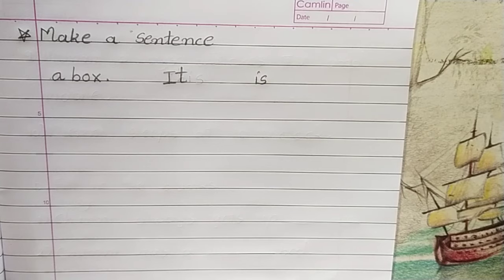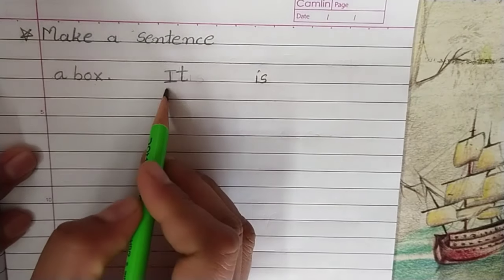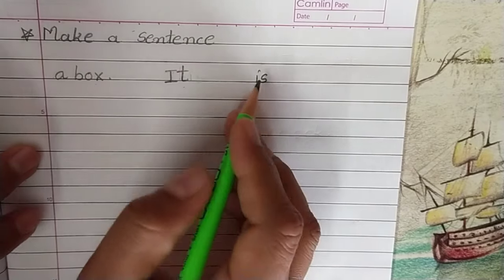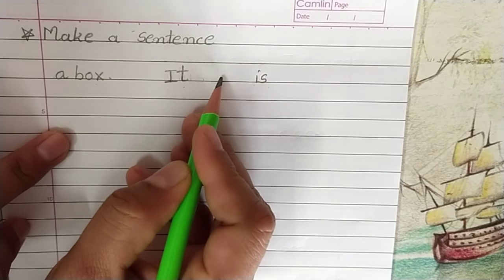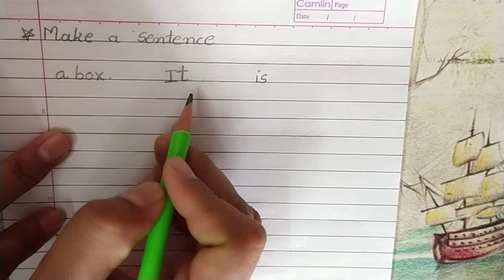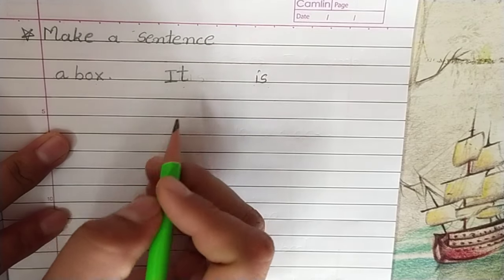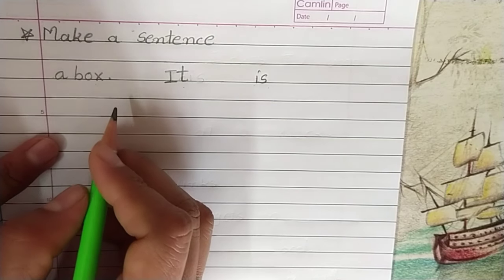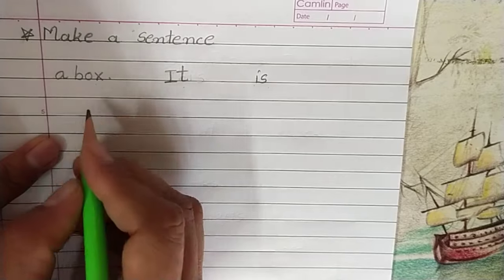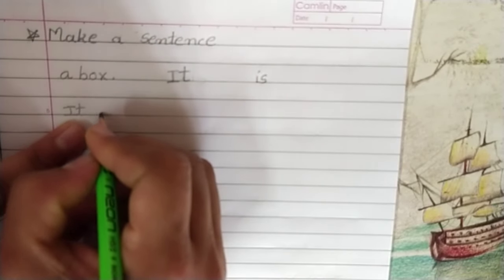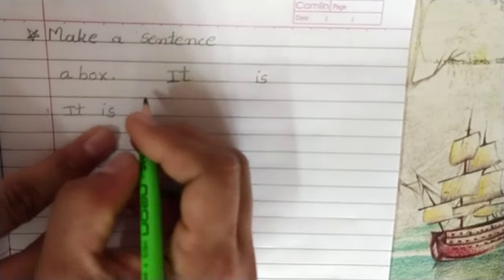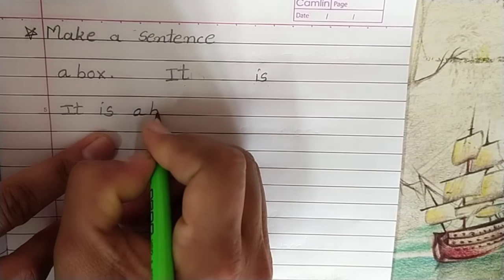અહીં કેટલાક આડા-અવળા શબ્દો આપેલા છે. એ શબ્દોને યોગ્ય ક્રમમાં ગોઠવી આપણે સાચું sentence બનાવશું. તો જુઓ — a box, It, અને is. જે પ્રમાણે આ શબ્દો છે, એ પ્રમાણે તમે આ શબ્દો વાંચી જુઓ, કે તમને sentence યોગ્ય લાગે છે, સૂચન સાચું છે કે નથી. આ વાક્યને આપણે યોગ્ય ક્રમમાં ગોઠવતા — It પછી to be નું રૂપ — એ પ્રમાણે It પછી આવશે is, અને ત્યાર પછી વસ્તુ — a box.